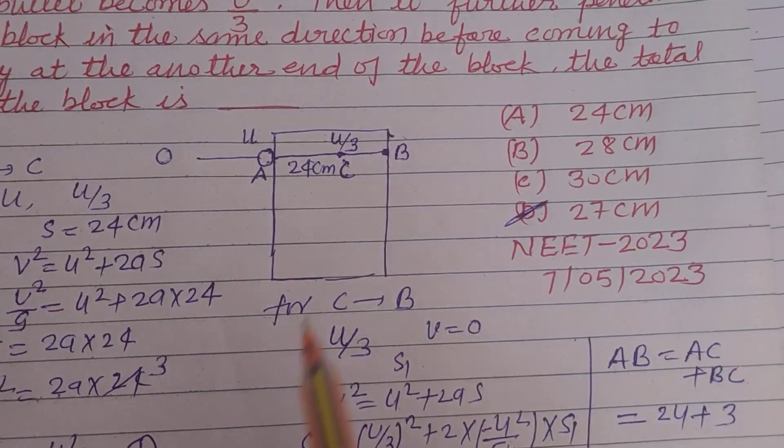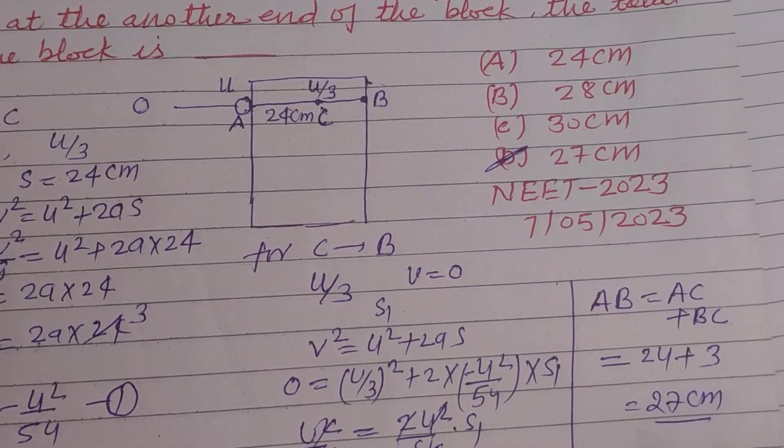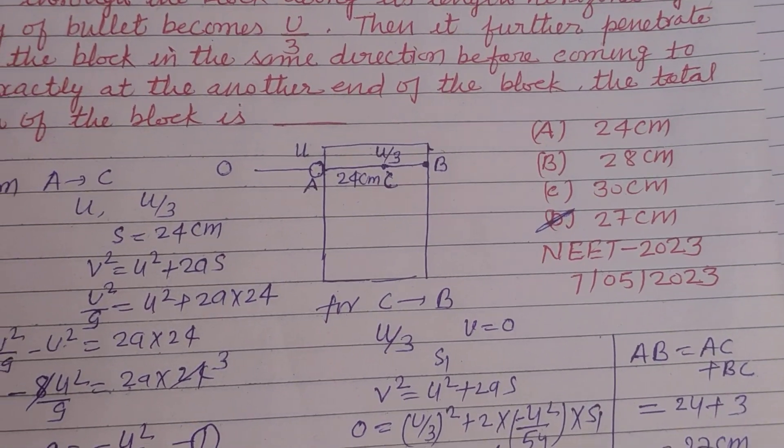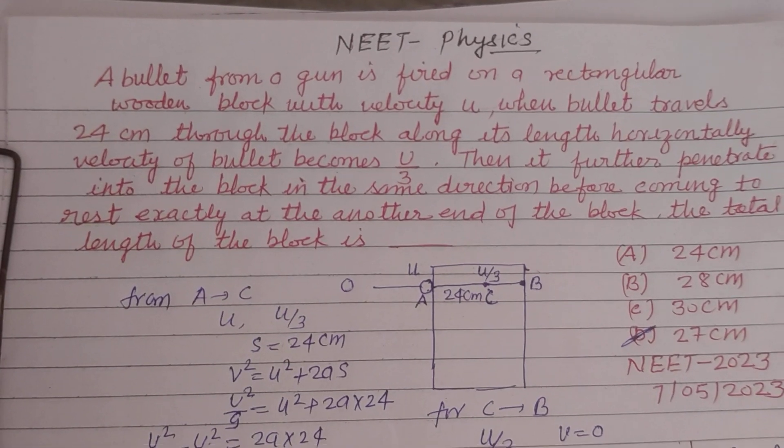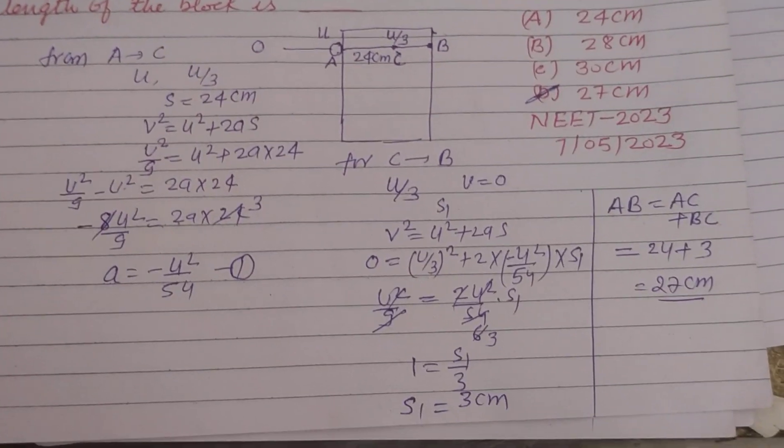Option D. So AB is 27 cm, so D option is correct. With this question student, I hope you got it. Please like the video, subscribe the channel, thanks for watching.